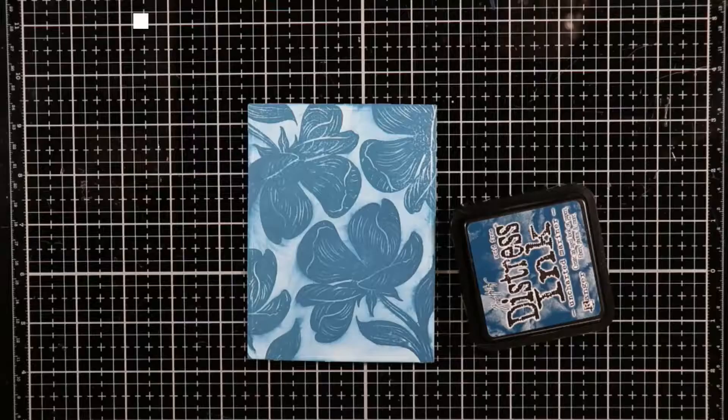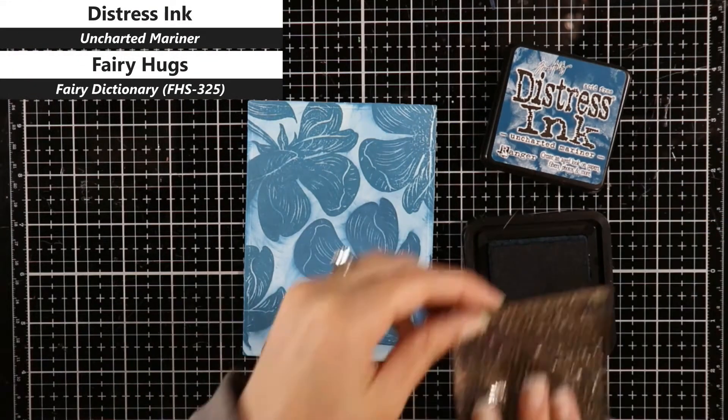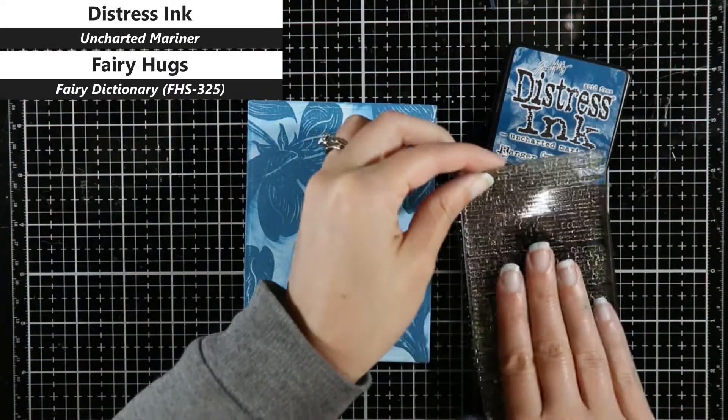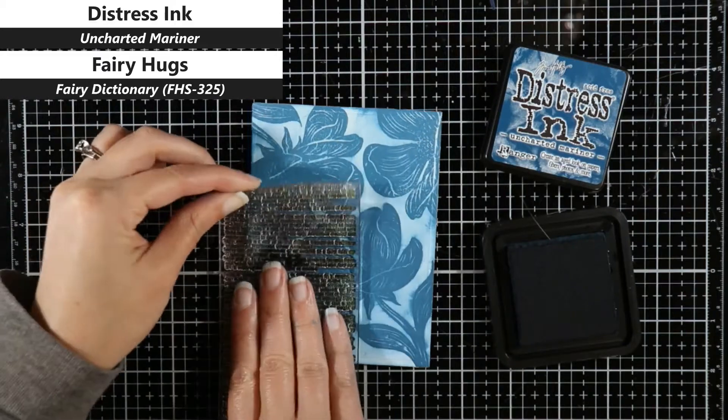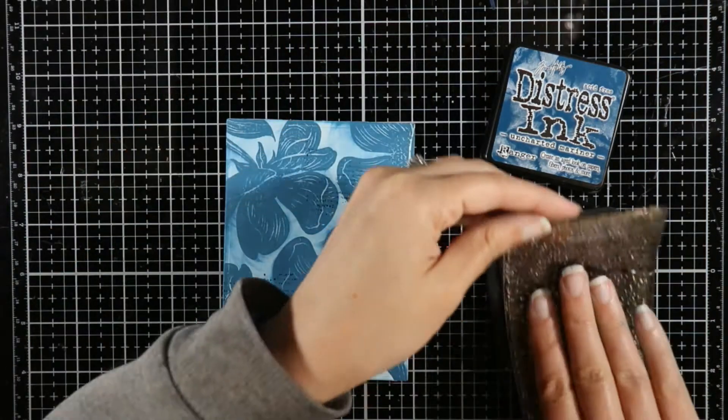Stamp and then smear, and now you can see that this all looks cohesive. It's a very nice soft look. So that is a very easy technique that anyone can do if you have distress oxides. If you want to try it with other pigment inks, I think that it would work, but don't quote me on it.